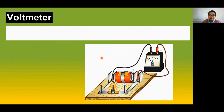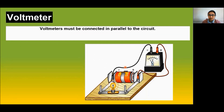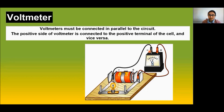A voltmeter must be connected in parallel to the electric circuit. The positive terminal of the cell is connected to the positive of the voltmeter, and the negative terminal of the cell is connected to the negative of the voltmeter.